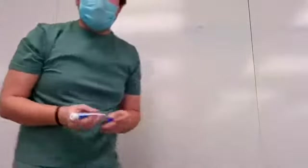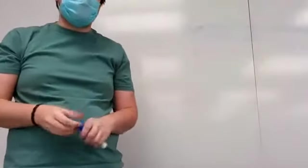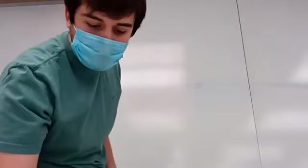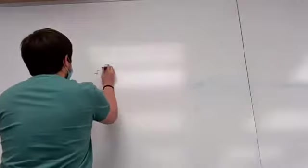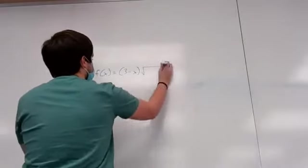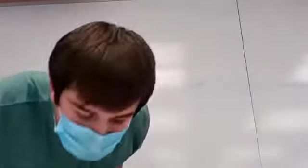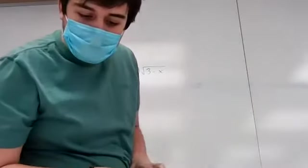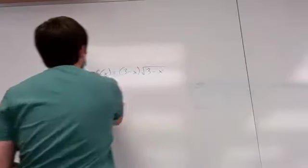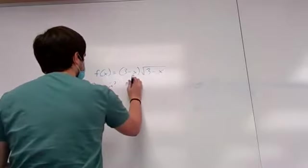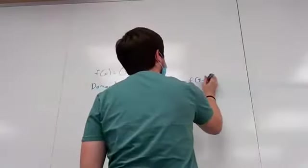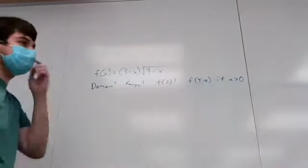Okay, hey everybody. For those watching, we don't have too many people here, so we'll just be running through the study guide as much as I can and we'll talk about it. So let's go ahead and get to it. The first problem says to find the domain and range of the function, which in this case is three minus x — actually it's (3-x)√(3-x) — and we also want to find f(2) and f(3-a), where a is greater than zero.